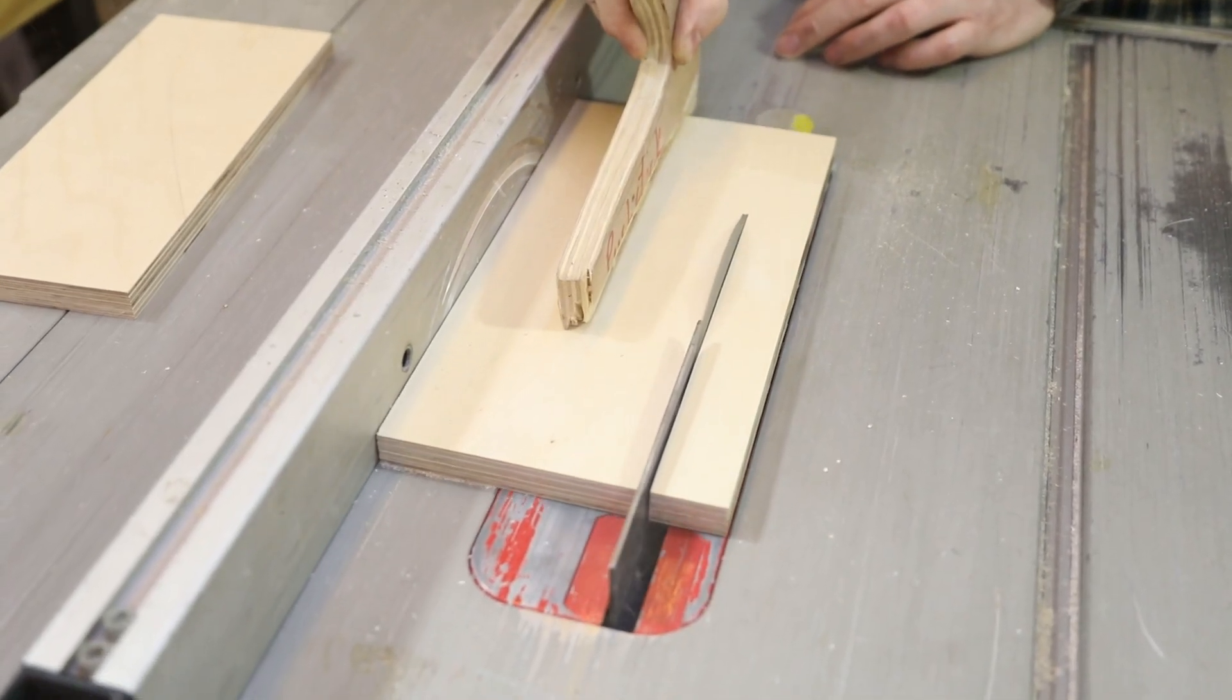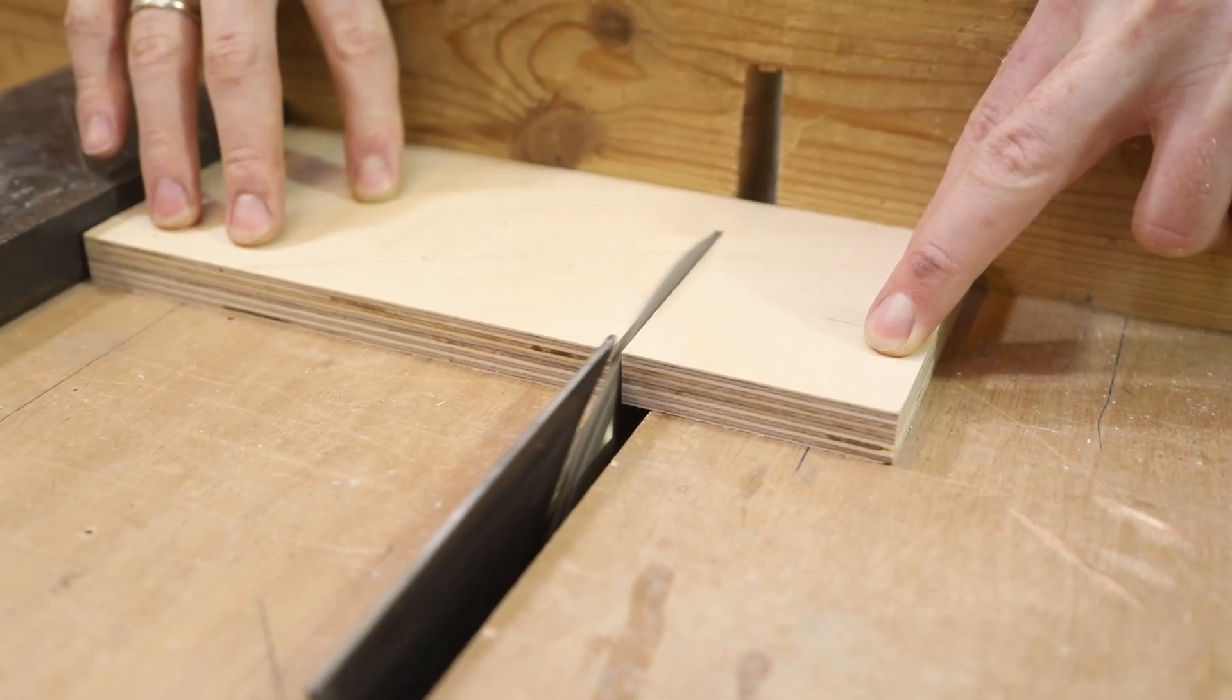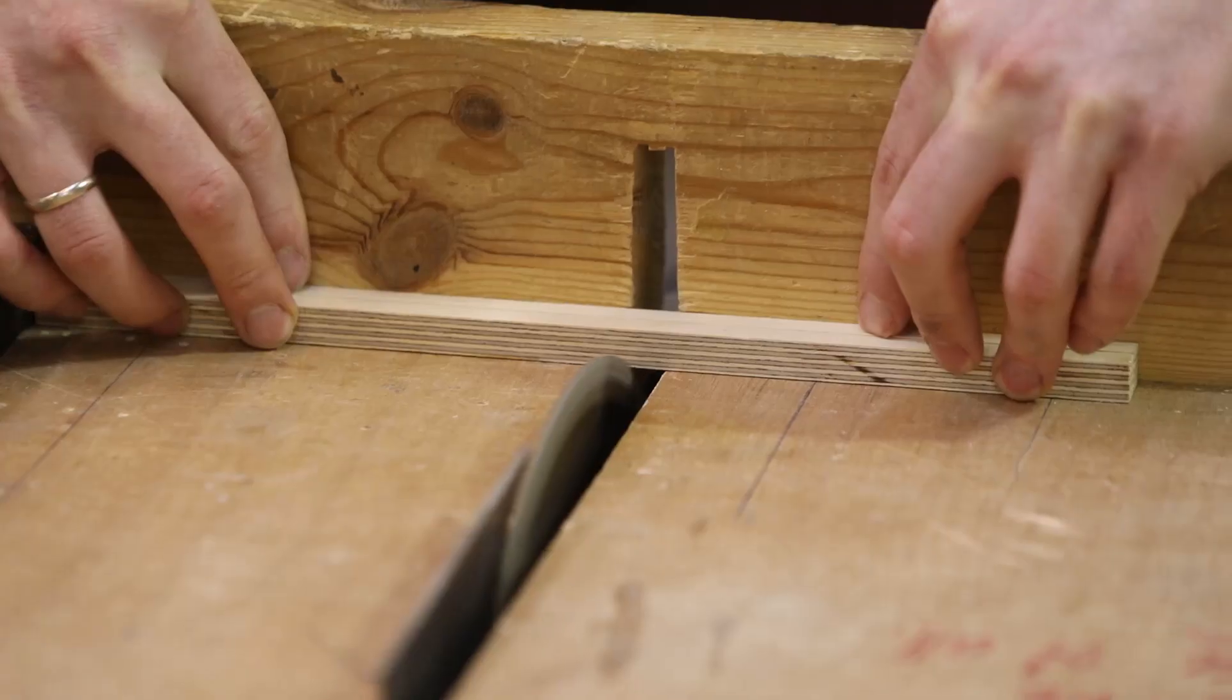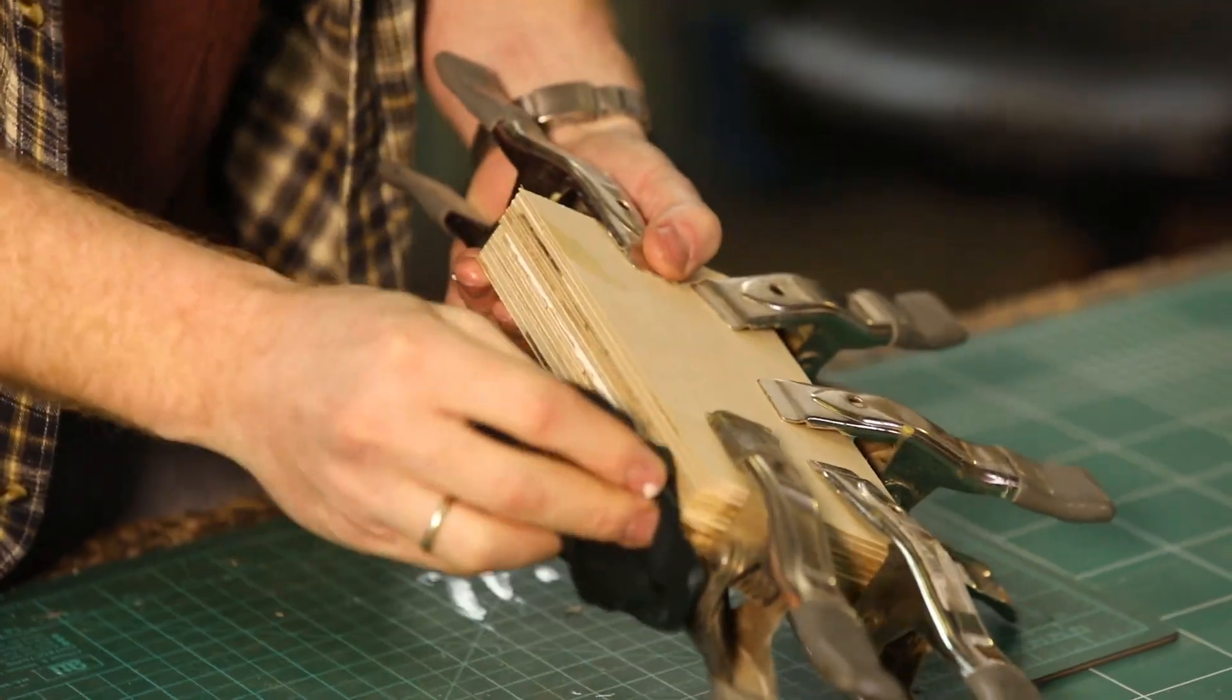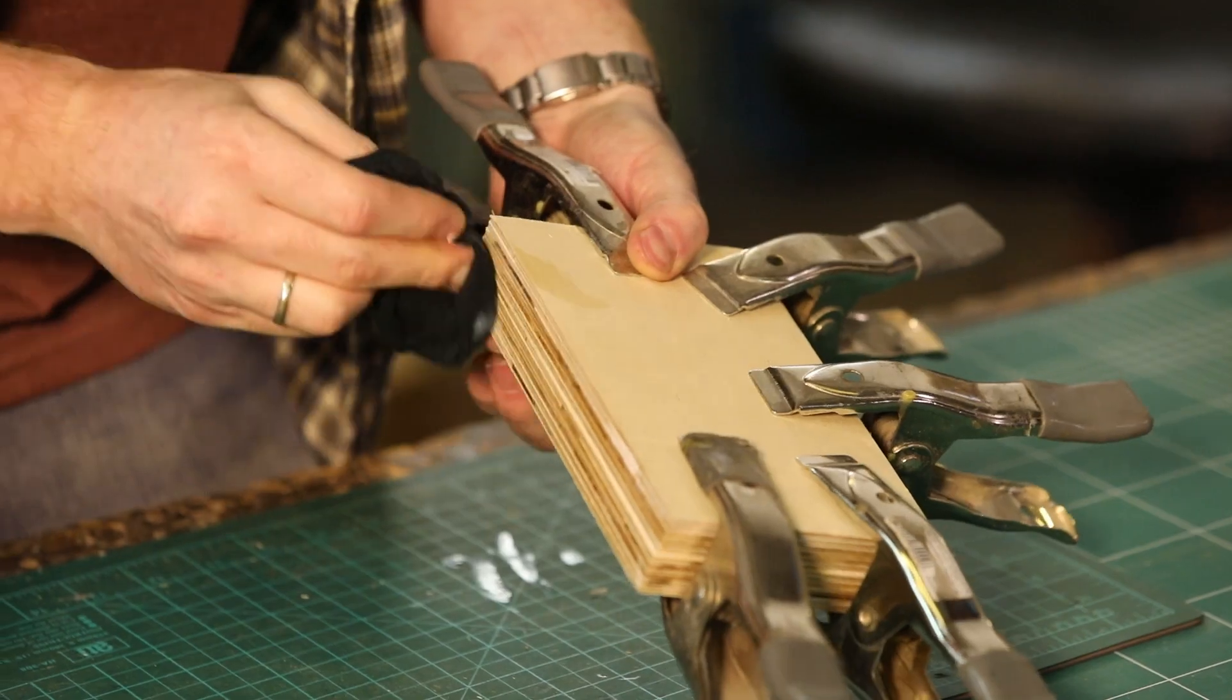For the base, I'm cutting a bunch of pieces of birch plywood to size. I want the top of the base to be thicker, so I'm gluing two pieces together, clamping them and cleaning the glue squeeze out with a wet rag.